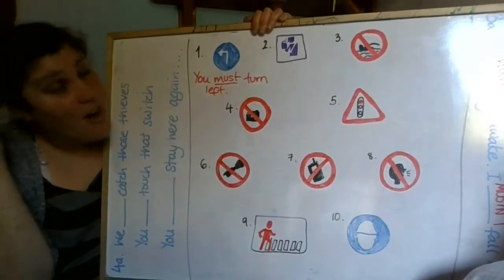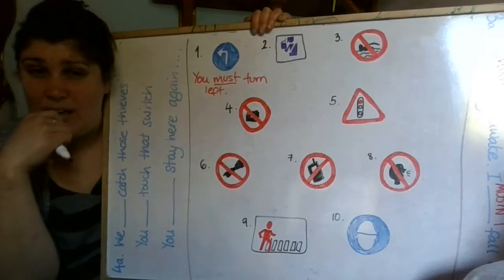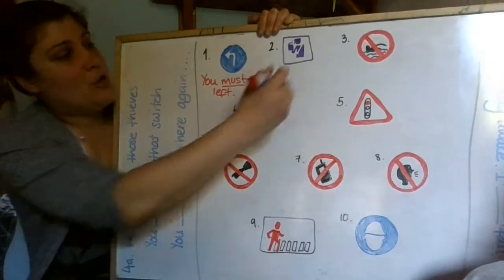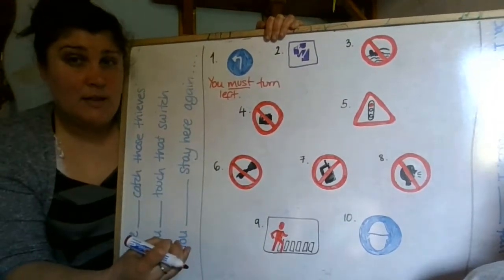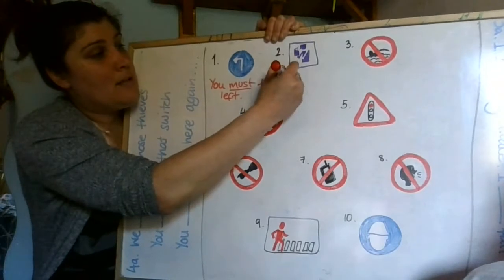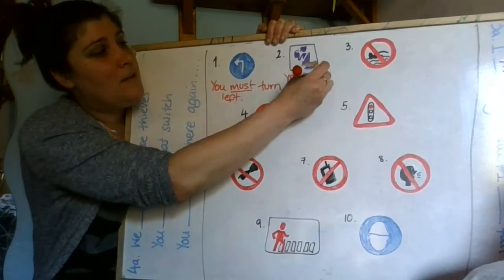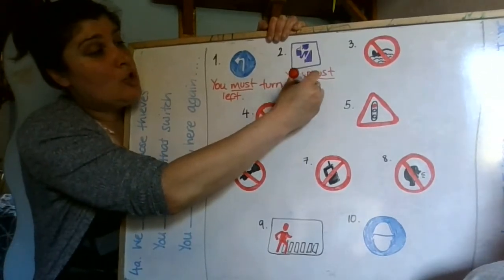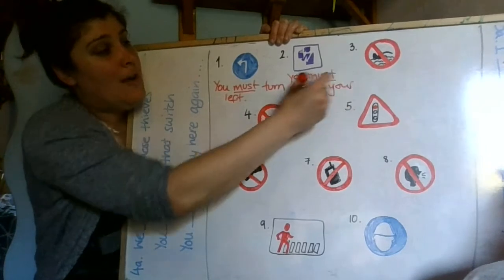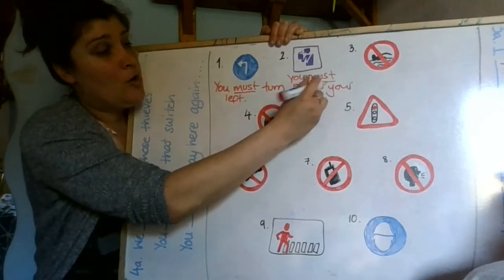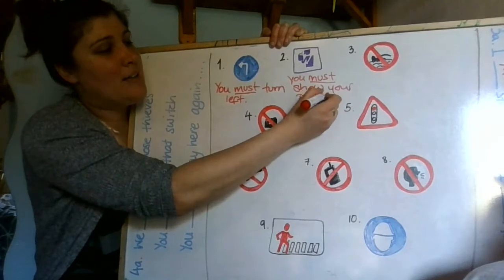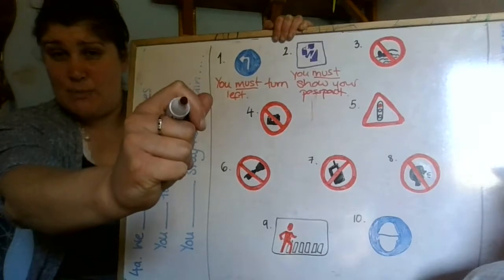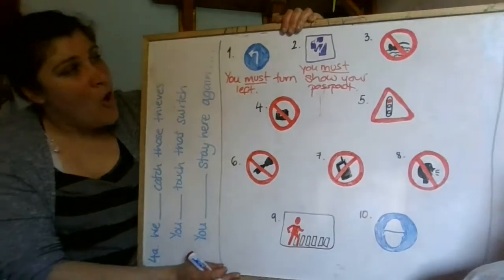Do you have an answer for each picture? Good, then let's go through. What do we have for number two — you must or you mustn't? Good, you must. And what must you do? You must show your passport. Here is my passport — please, can I come in?